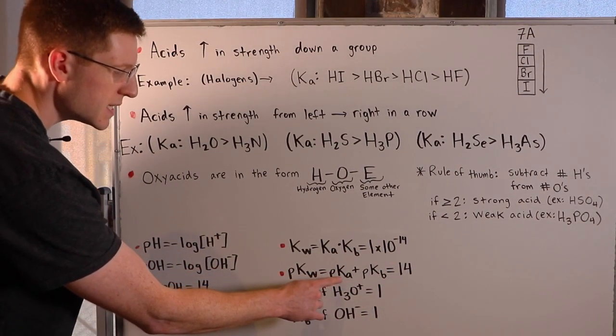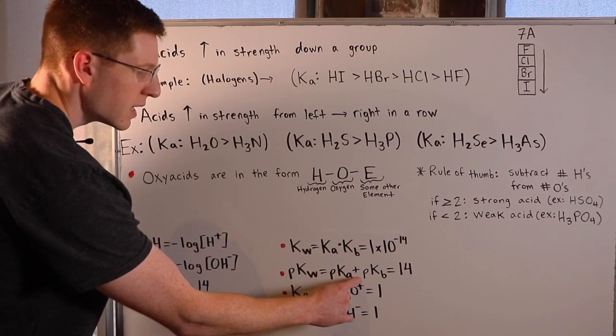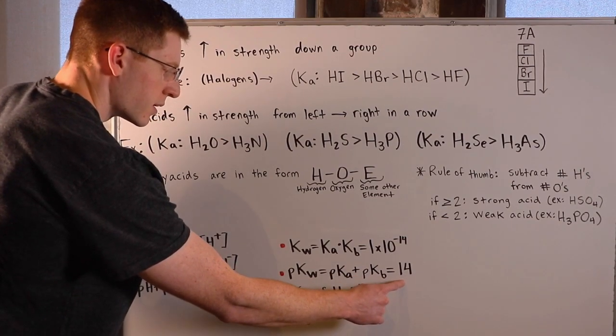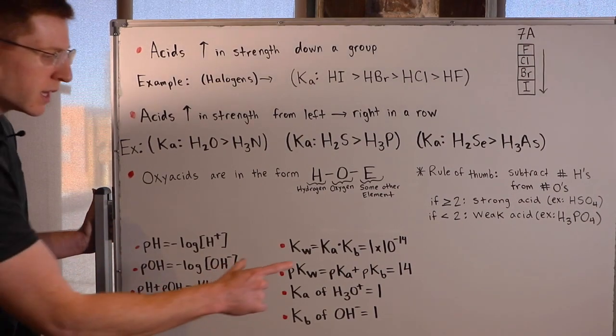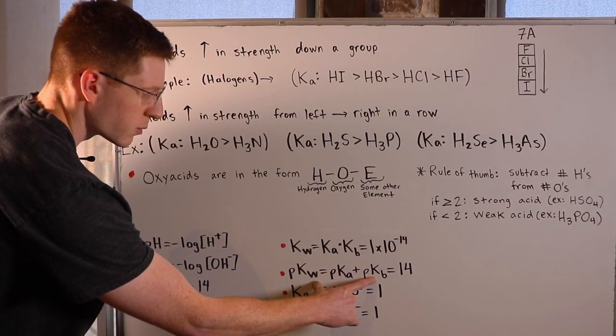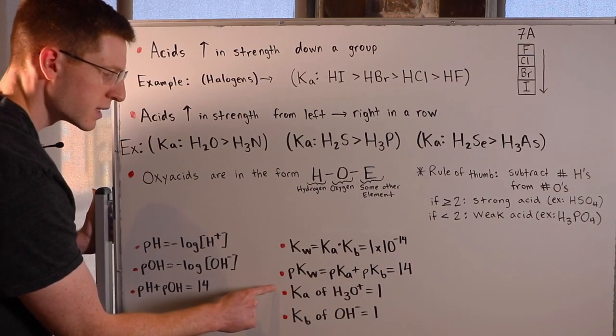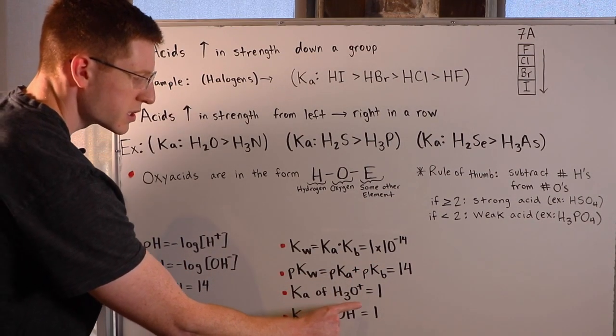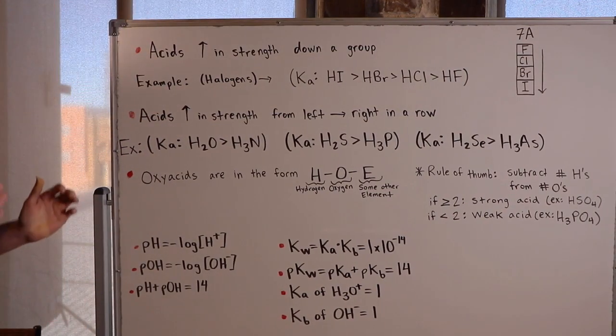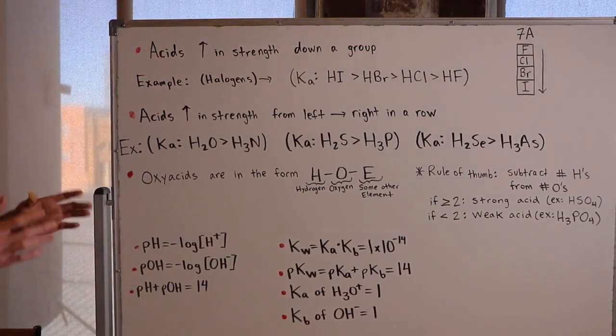pKw is equal to pKa plus pKb, and that's equal to 14. So remember, p simply means negative log of. This equation is basically like we took the negative log of everything in this equation. The Ka of H3O+ is 1, and finally the Kb of OH- is also 1.